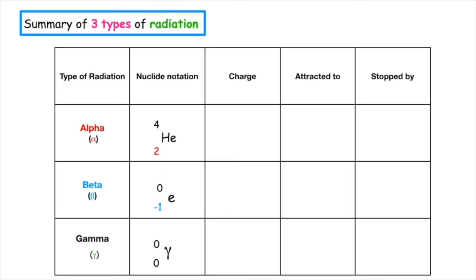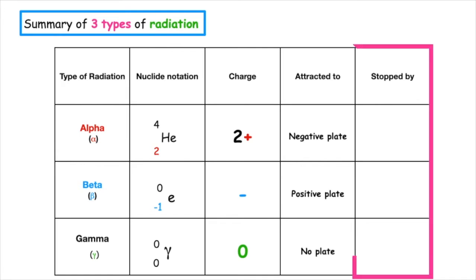We have to know each type of radiation, the nucleic notation for that, the charge of that particular type of radiation, and what plate it would be attracted to if it was put in an electric field. However, the main focus of the summary here is essentially what the radiation can be stopped by.